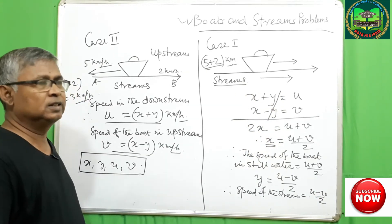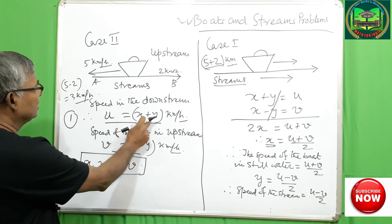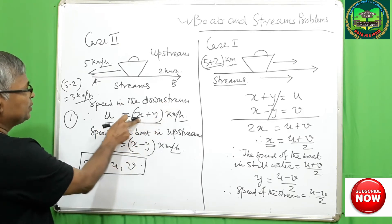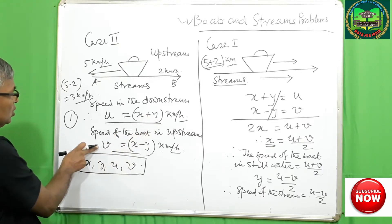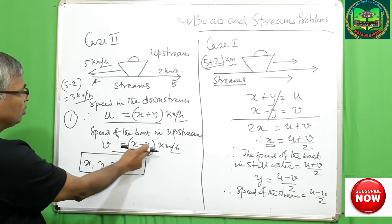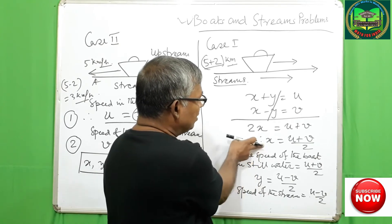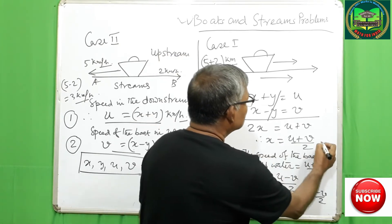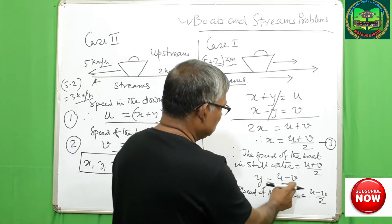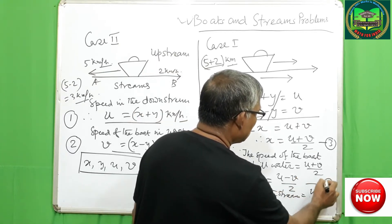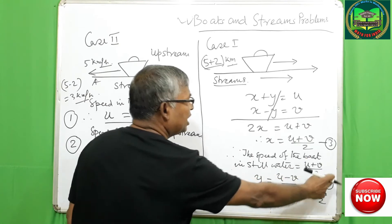Let us see all four relations. First, U equals X plus Y — that is, speed of the boat downstream equals speed of the boat plus speed of the stream. Second, V equals speed of the boat minus speed of the stream. Third, speed of the boat equals U plus V by 2. Fourth, speed of the stream Y equals U minus V by 2. All four relations are very important in this topic.